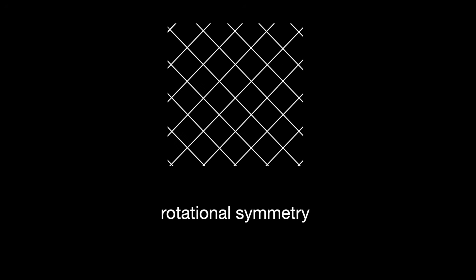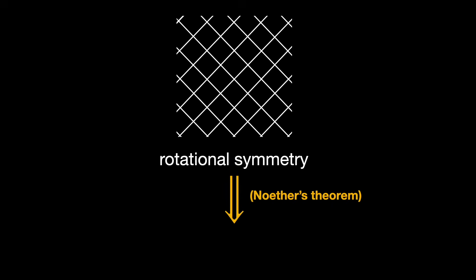But the story doesn't stop there. Imagine rotating your coordinate system, like spinning your frame of reference. If the geometry and physical laws remain unchanged under such a rotation, that's rotational symmetry. Noether's theorem tells us that the symmetry leads to the conservation of angular momentum.